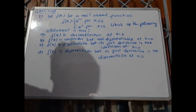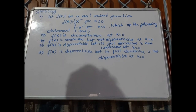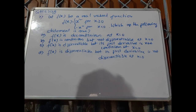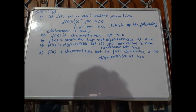This is problem number 7 of GATE 2018. Let f(x) be a real-valued function where f(x) equals x squared for x greater than or equal to 0, and minus x squared for x less than 0. Which of the following statements is true?